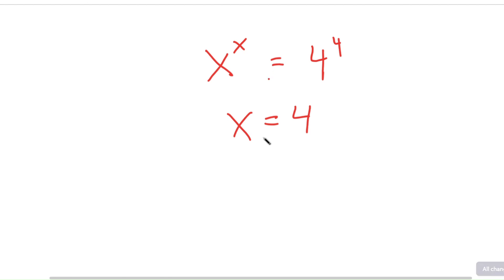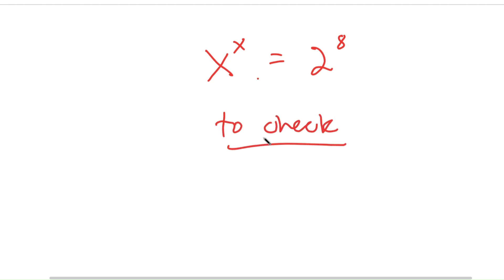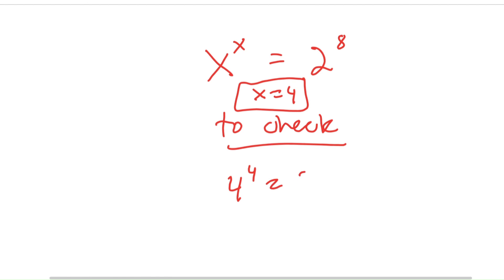Going back to check, my original equation was x to the power of x is equal to 2 to the power of 8. We got x is equal to 4 as our solution, so I plug this in and get 4 to the power of 4 is equal to 2 to the power of 8.